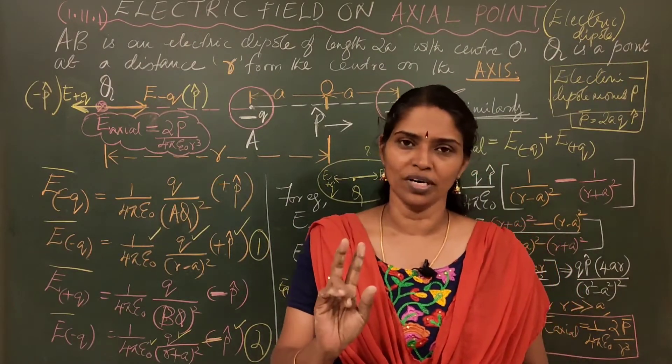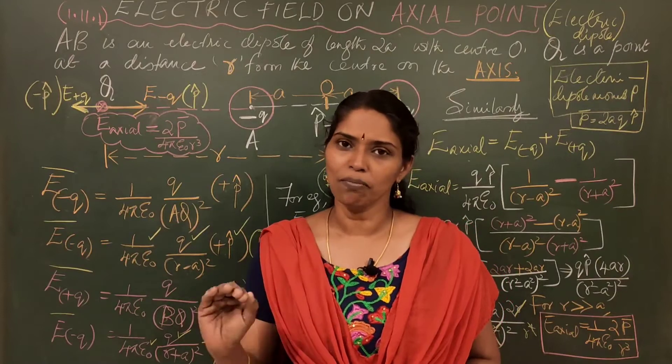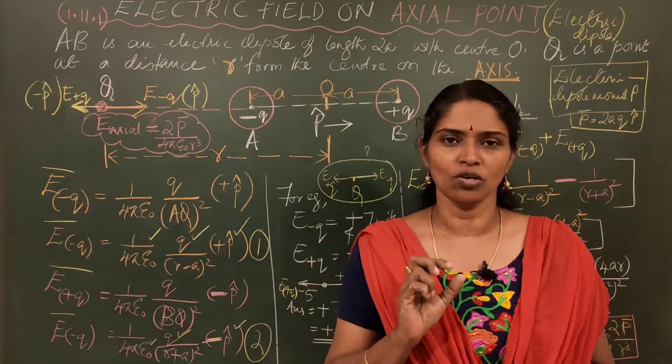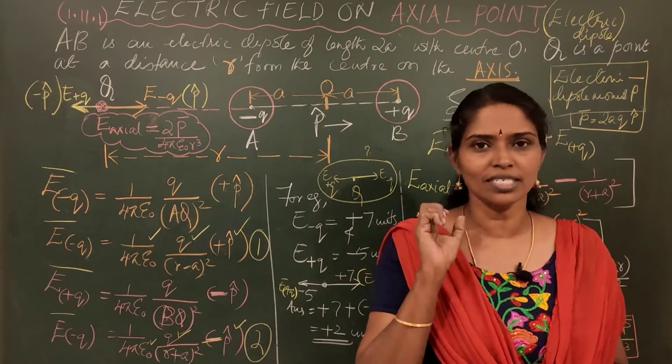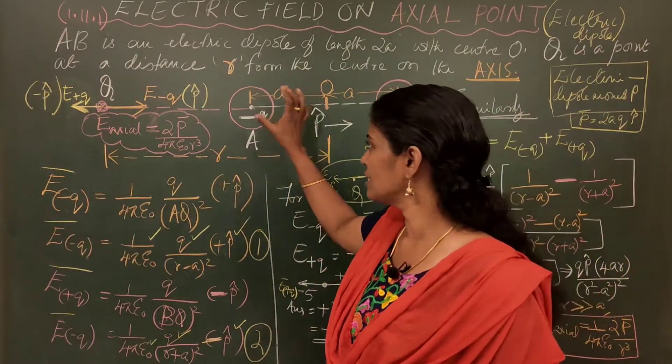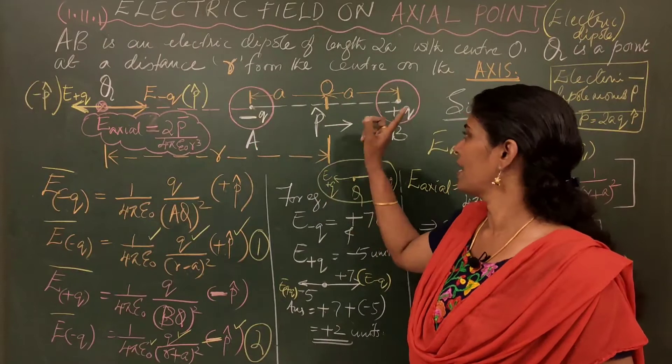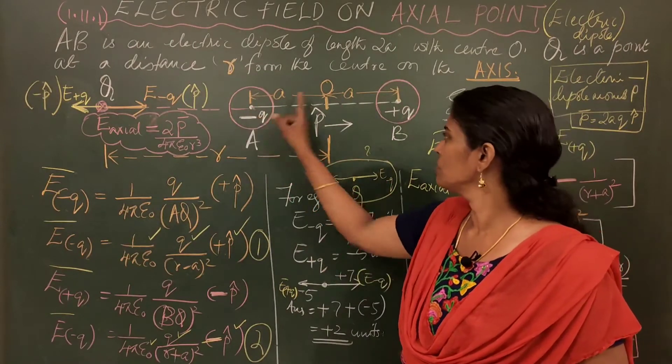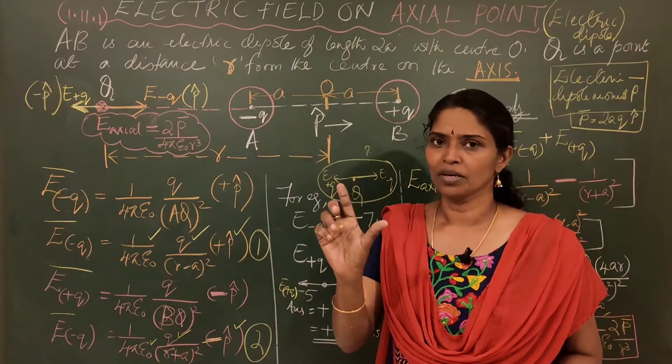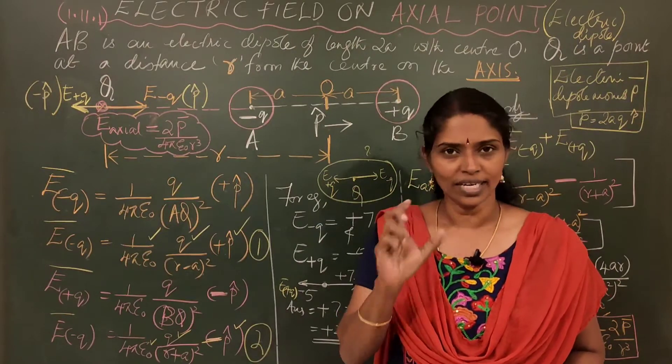Just recap of the two points. Electric dipole is simply two equal and opposite charges at a small separation. Here we have a charge at A, another charge at B, they are equal and opposite and the separation between the two is 2A. That is known as an electric dipole.